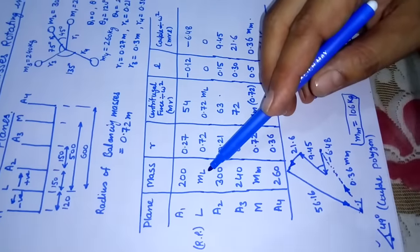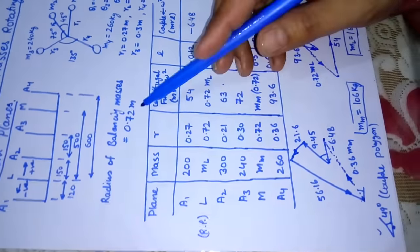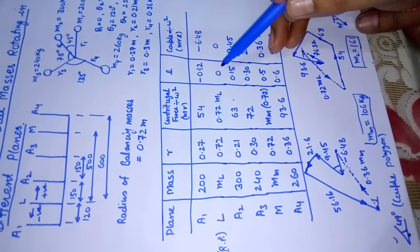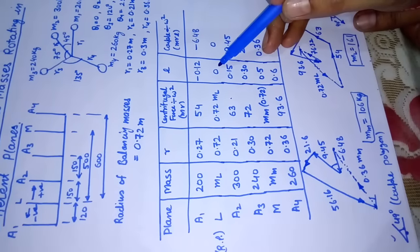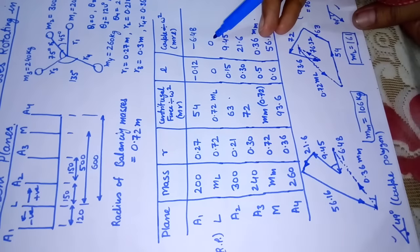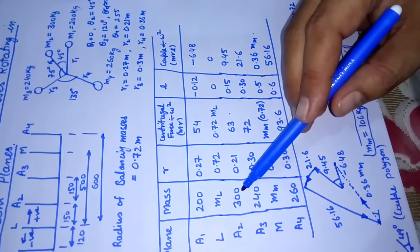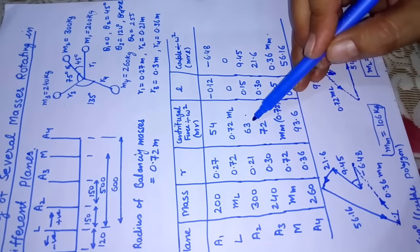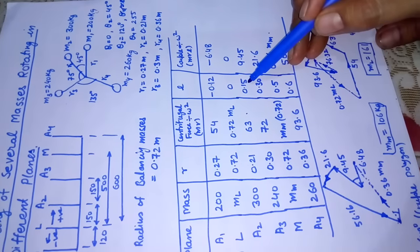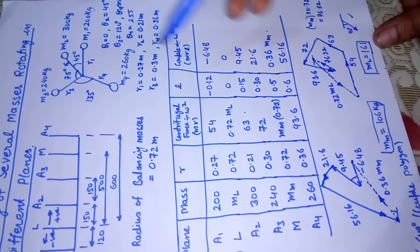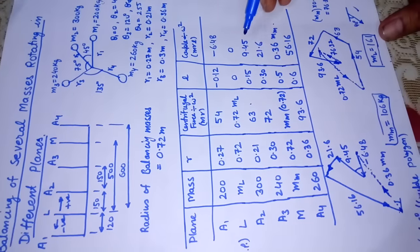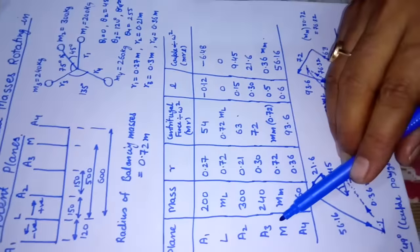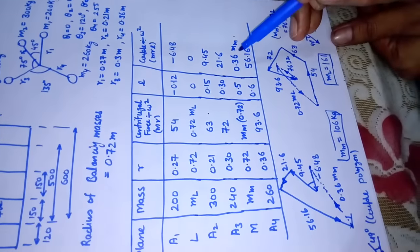Similarly, when we talk about plane l, the balancing mass is ml which is unknown. Radial distance is 0.72, already given in the problem, so the force becomes 0.72 ml. Because the distance of plane l from plane l is 0, the couple will become 0. a2 is 300, radial distance is 0.21 r2, then centrifugal force by multiplying this. The location from the reference plane is 150, that is 0.15. We have got mrl. Similarly, we have calculated for a3, m, and a4.